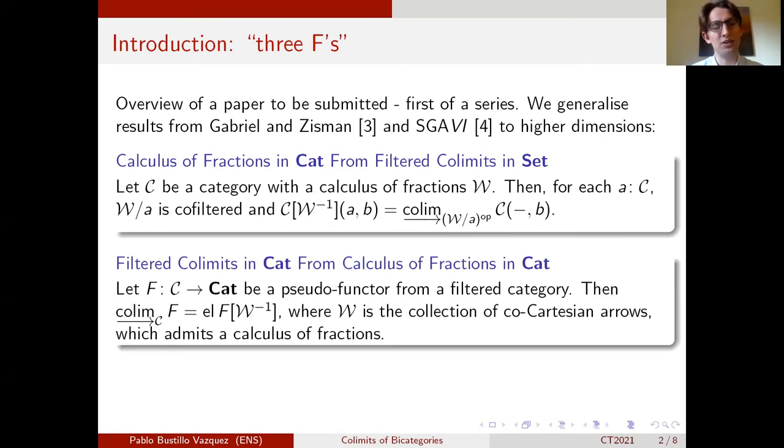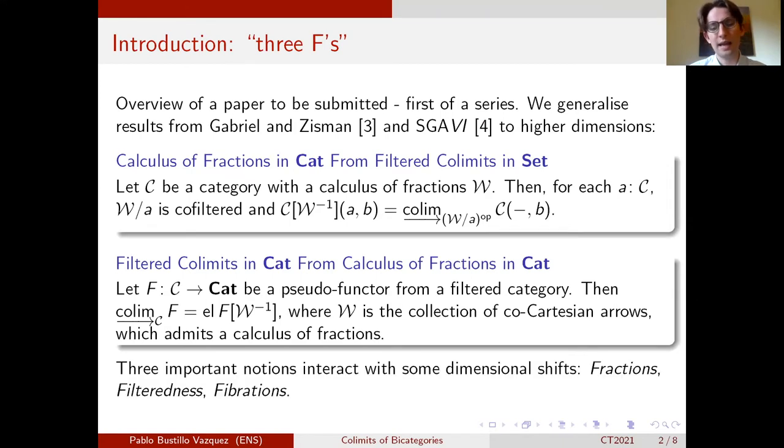The second result from SGA tells you that if you have a pseudofunctor from a filtered category C to cats, you can compute its colimits by doing a calculus of fraction on the Grothendieck construction. As we will see later, three very important notions interact here: fractions, filteredness, and fibrations.